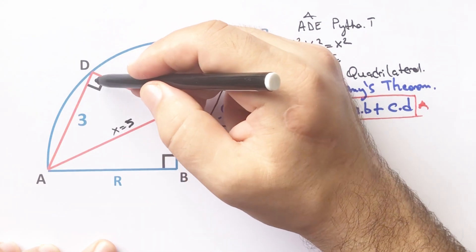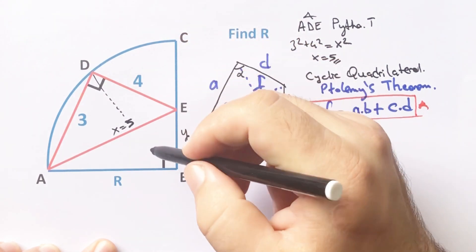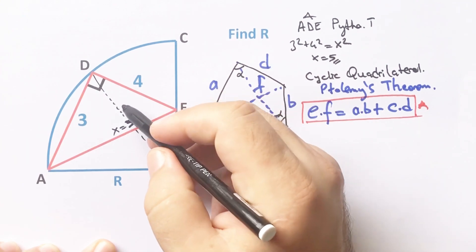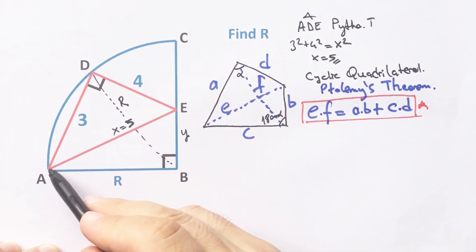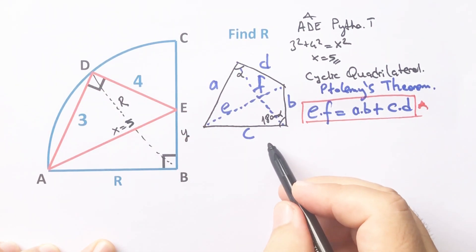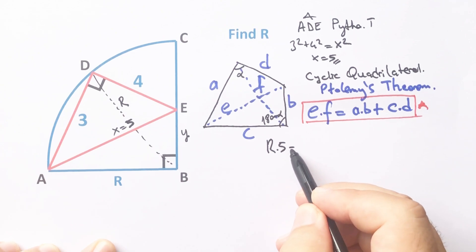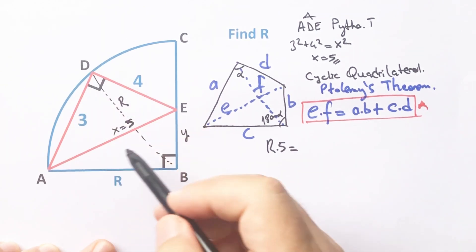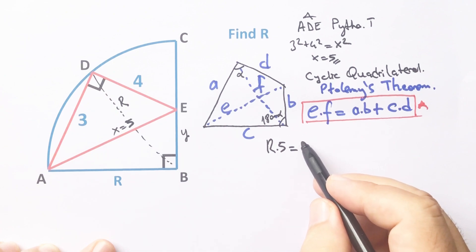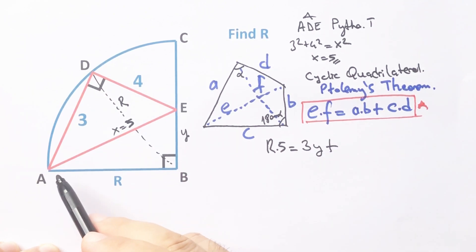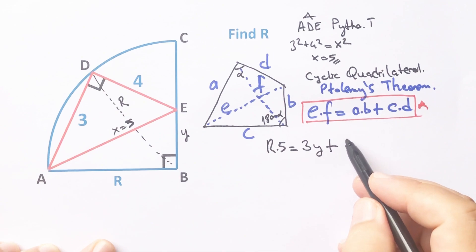If we apply this theorem to the question, we must draw the other diagonal. So this length is also R. And then R times 5 equals 3 times y plus 4 times R.